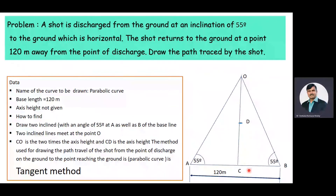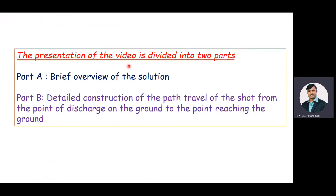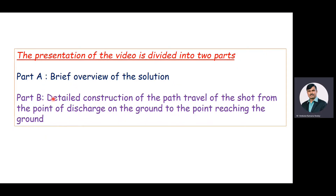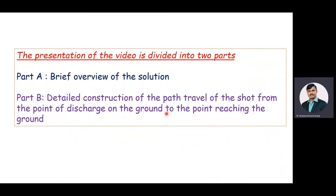In order to construct the path of the curve, that is the parabolic curve, we need to use the tangent method. The presentation of this video is divided into two parts: Part A, a brief overview of the solution, and Part B, detailed construction of the path travel of the shot from the point of discharge on the ground to the point of reaching the ground.